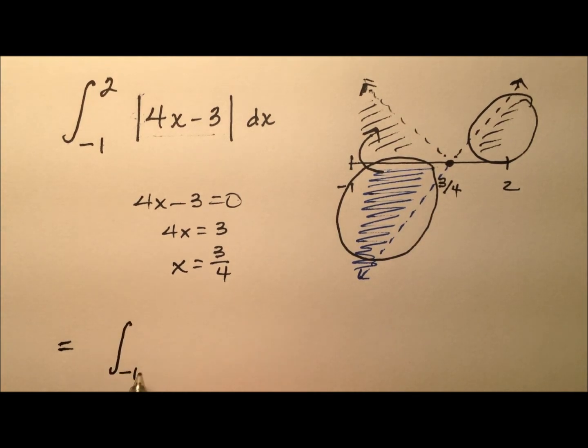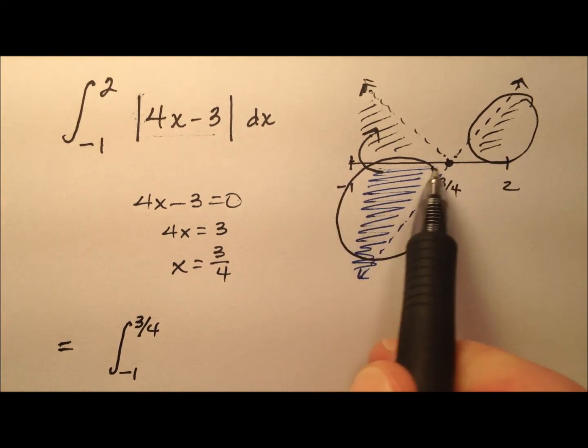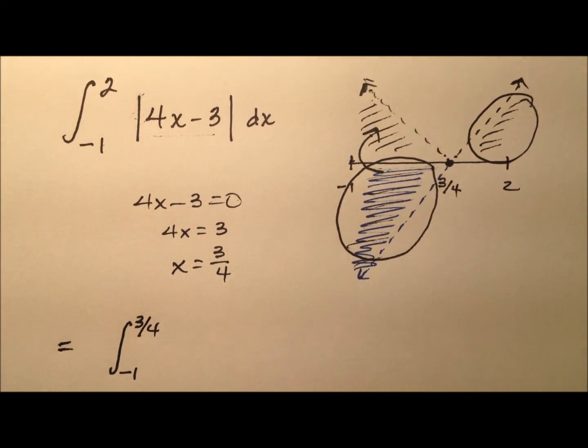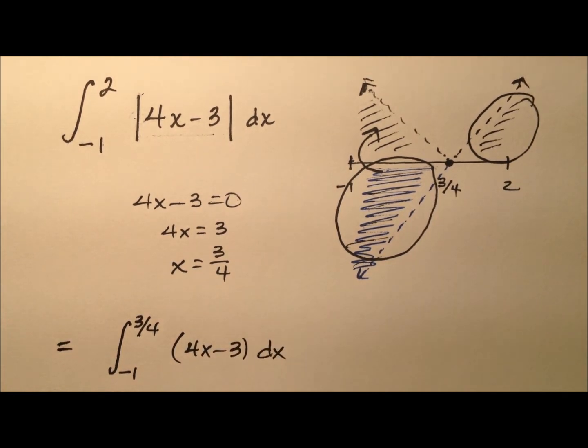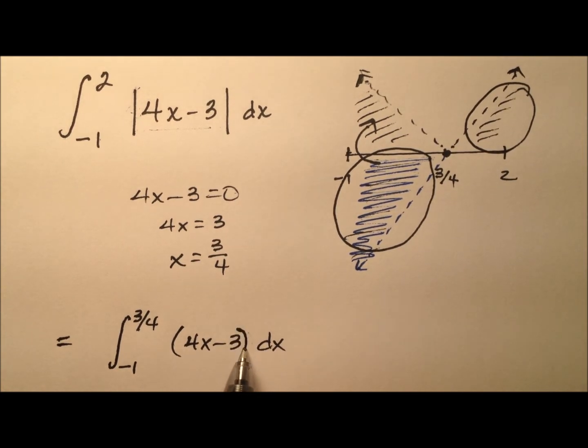So we're going to go from negative 1 to 3 fourths, from negative 1 to 3 fourths, that's where this negative area took place. And we're going to do this for the 4x minus 3 with respect to x. And of course, we're no longer using the absolute value bars, we're just going to use these parentheses here.